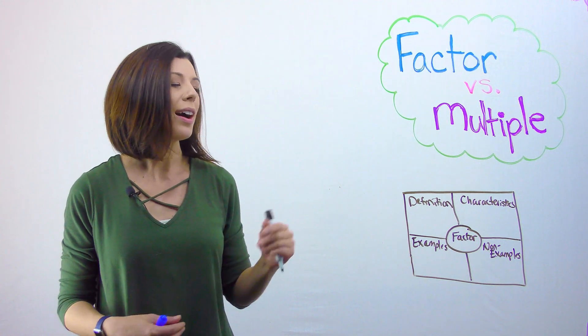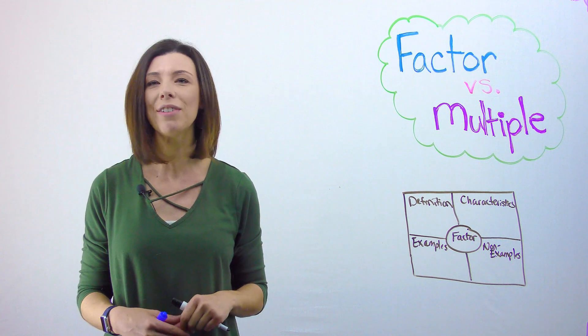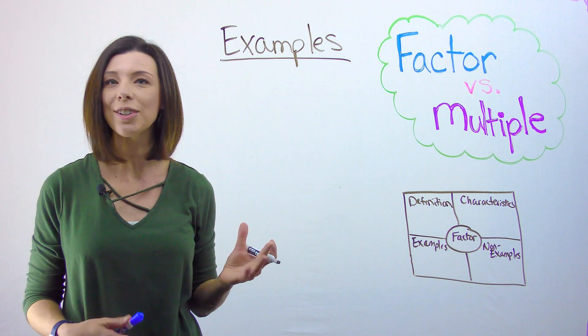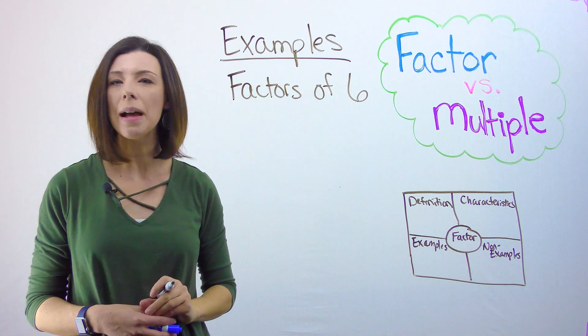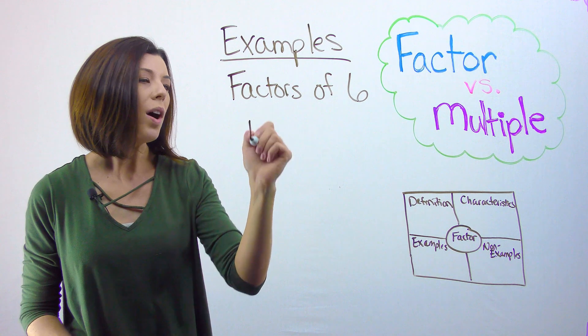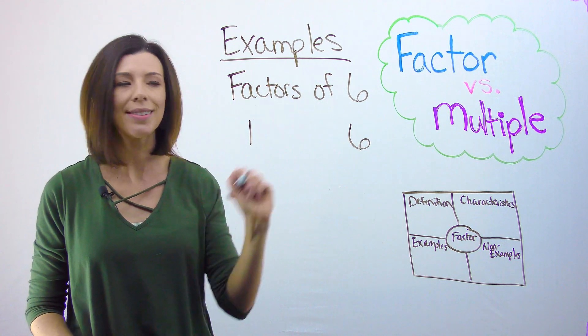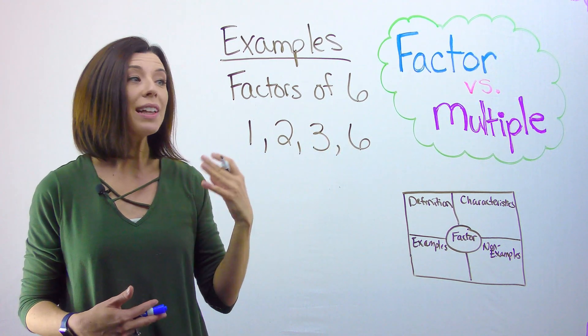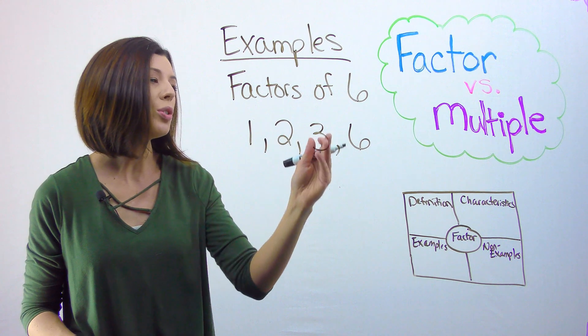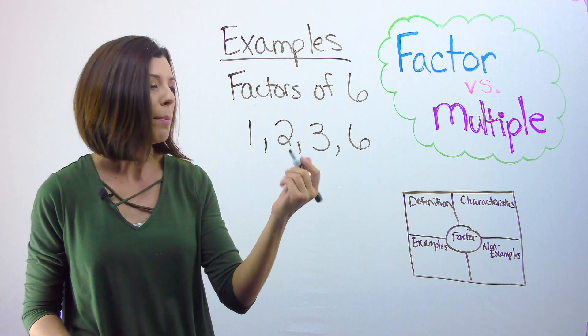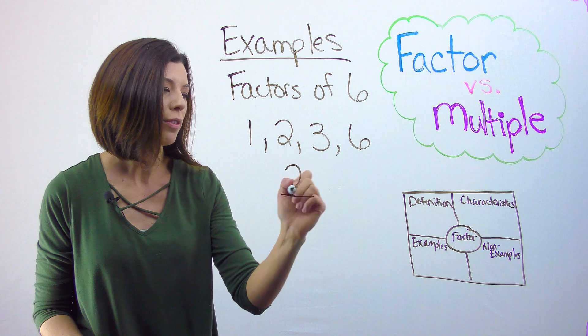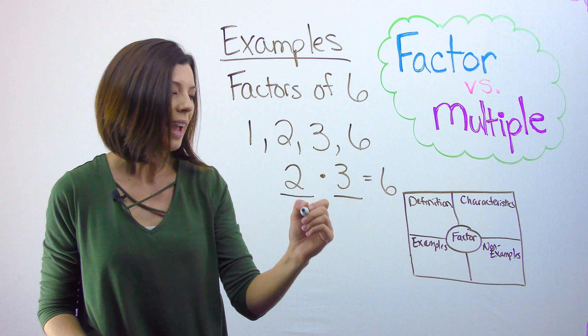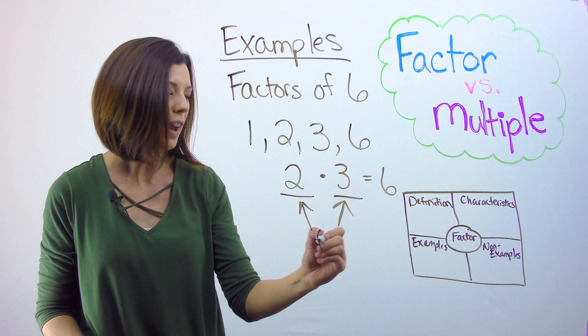Let's start with some examples and see if you can come up with your own definition for a factor. So let's take, for instance, the factors of six. Here would be some examples. One times six is six. Two times three is also six. So if I list the factors of six, I would write one, two, three, six. Another way that I could show this on my Frayer model is to just do something like this. And these are both called factors.